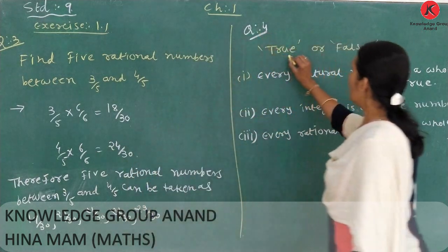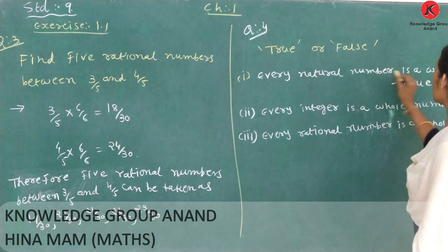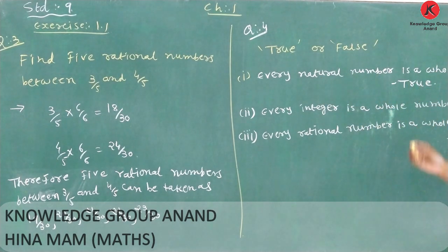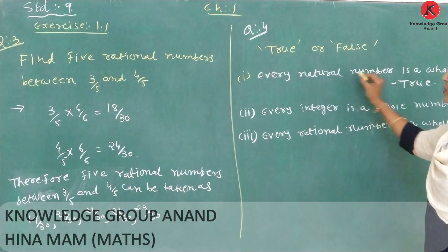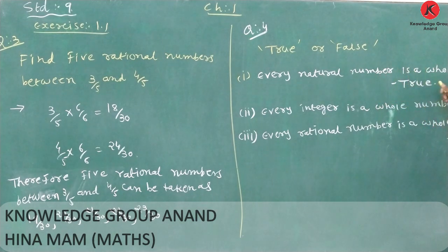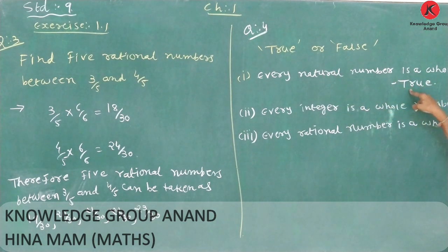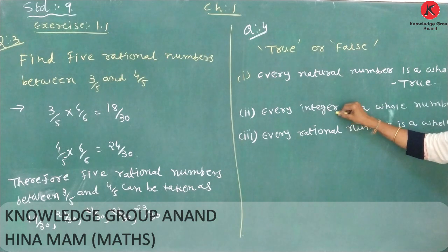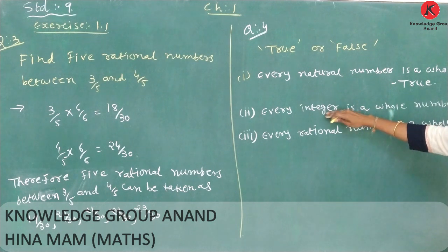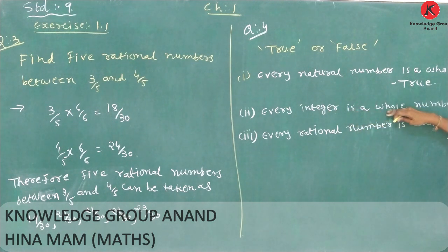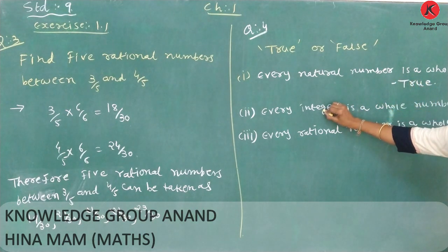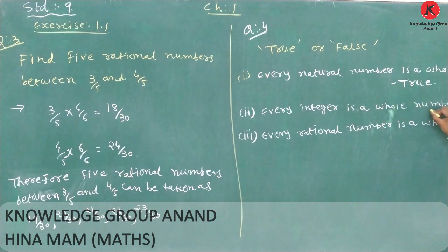Question number 4: True or False? Statement 1: Every natural number is a whole number. True, because natural numbers start from 1, 2, 3, and all these are whole numbers. So this statement is true. Statement 2: Every integer is a whole number. Integers include 0, plus or minus 1, plus or minus 2, and so on. Whole numbers are 0, 1, 2, 3 — they do not include negative numbers. Since minus 5 is not a whole number, this statement is false.